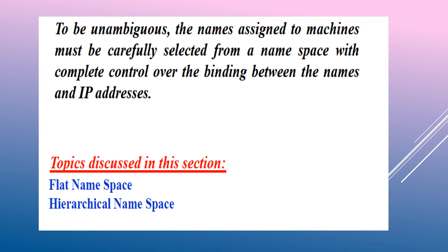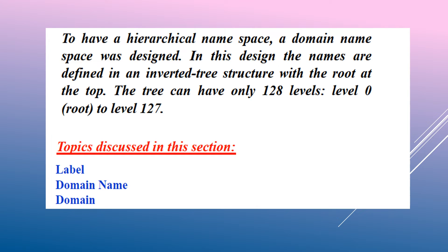In hierarchical namespace, each name is made up of several parts. The first part defines the nature of the organization, the second defines the name of the organization, and the third defines the department or section, and so on. The authority to assign and control namespaces can be decentralized. A central authority assigns the part defining the organization's nature and name, while the rest can be managed by the organization itself — adding suffixes or prefixes for hosts or resources. Even if part of an address is the same, the whole address must be different and unique.